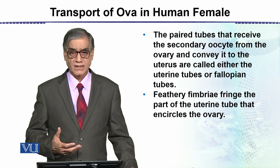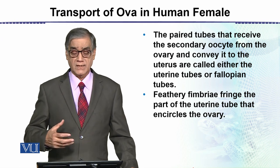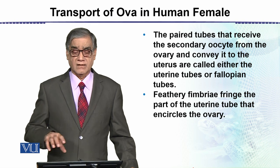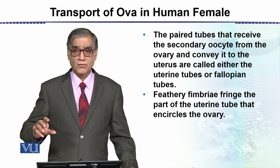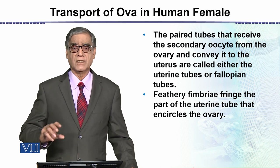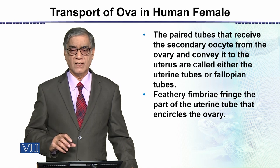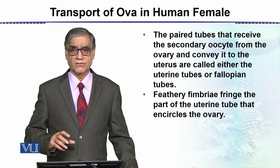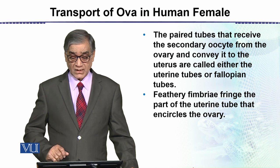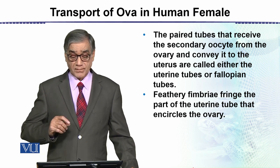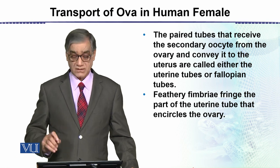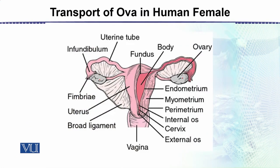While studying the reproductive system, we will also show the slide explaining the female reproductive system. From that explanation, we can understand what the path of the released egg is. The feathery fimbria fringe the part of the uterine tube and encircle the ovary. In this diagram we can see the transport.